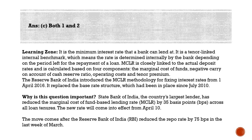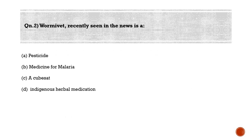Under MCLR, every bank must announce its lending rate every month — this is mandatory as per the RBI. It must declare five rates covering loans from one day to 365 days. This makes lending more transparent and fair to borrowers, and also improves monetary transmission to the economy. Those are the advantages of MCLR.